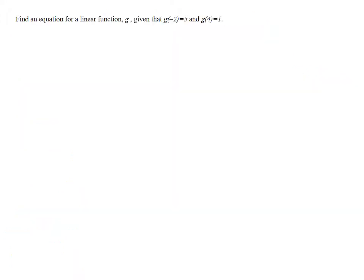Let's do one more example. Let's say we want to find the equation for the linear function g, given that g of negative 2 equals 5 and g of 4 equals 1. So this first functional value is telling us we have a point at (-2,5). The second functional value is telling us we have a point at (4,1). So first step, whichever method you want to use, you need to find the slope.